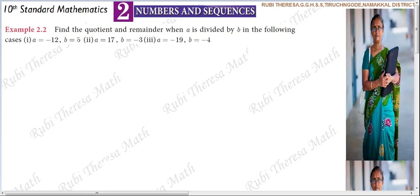Numbers and sequences, chapter one, example 2.2: find the quotient and remainder when A is divided by B in the following cases. Here we have given Euclid division lemma and algorithm based sums.